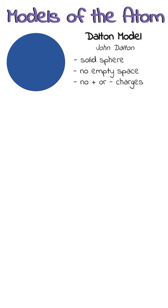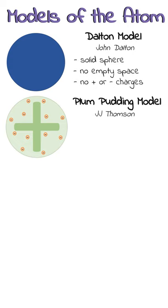The next model was the plum pudding model by JJ Thompson. This model was also a solid sphere, but the whole sphere was positively charged with electrons scattered throughout.